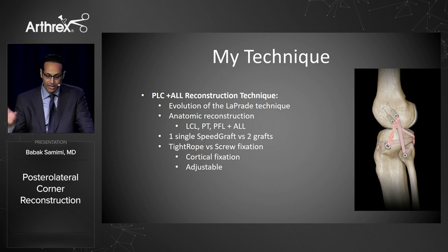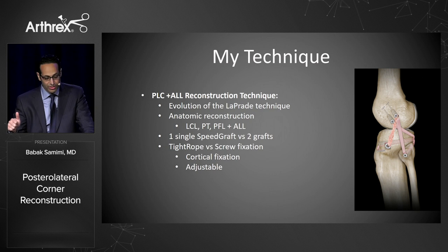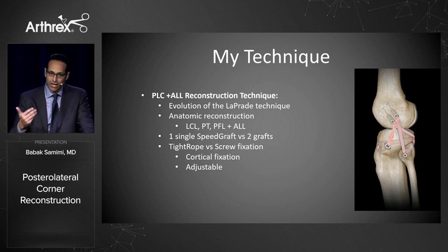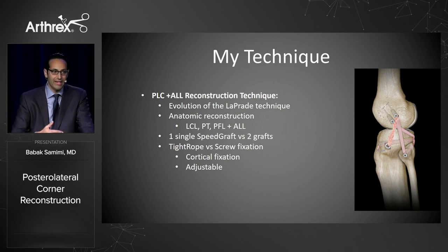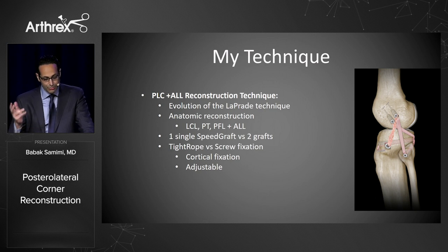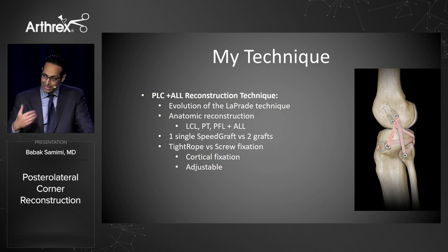I have my own unique technique that's an evolution of the LaPrade technique, utilizing the same anatomic structures: reconstruction of the fibular collateral ligament, popliteus tendon, and popliteofibular ligament. Since I commonly see these injuries combined with ACL injury, I can add an ALL reconstruction as a simple added step. I use one single speed-bridge graft as opposed to two grafts, which cuts down on preparation time and cost.